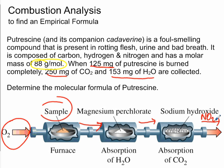The key idea in combustion analysis is that all of the carbon in the compound ends up in the carbon dioxide, and all of the hydrogen ends up in the water vapor. So we're going to use the carbon dioxide to find out how much carbon was in the compound, and use the water vapor to find out how much hydrogen was in the compound.